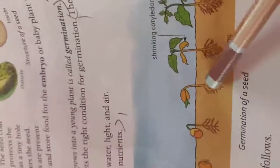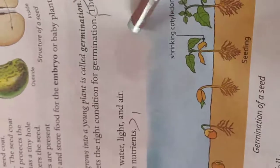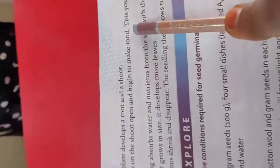The baby plant develops root and shoots. The leaves on the shoot open and begin to make food.